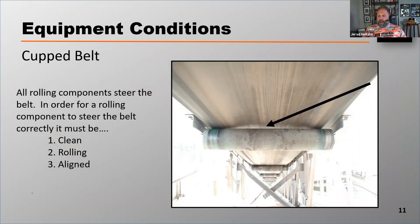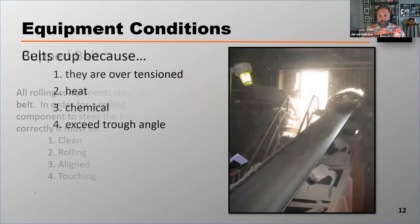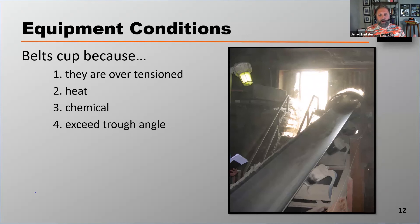Another reason why a belt can mistrack is when the belt is cupped. If a rolling component isn't touching the belt, it's not going to steer the belt correctly — we've got to make sure that rolling component is in contact with the belt. Belts can cup because they're over-tensioned, or from running hot material such as smoldering coal off the pile. Certain chemicals can also cause a reaction with the rubber compound that causes cupping, as can exceeding the trough ability or trough angle of the belt.